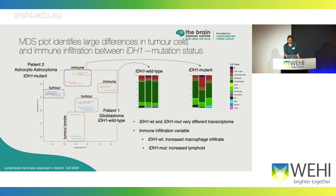We were able to deconvolute the different immune cell types from this data. We found that the IDH1 wild type glioblastoma had increased macrophage infiltration, whereas the IDH1 mutant anaplastic astrocytoma had increased lymphoid cell infiltration. These findings had also recently been published in Cell based on flow cytometry data, so we knew that we were seeing the expected different populations in these two types of tumours.